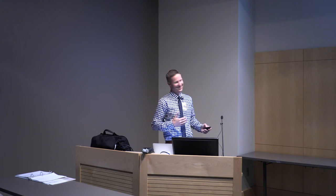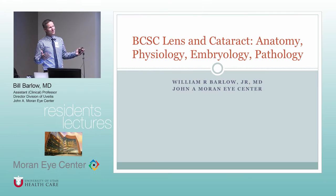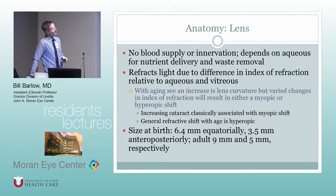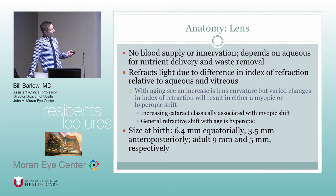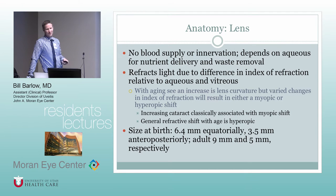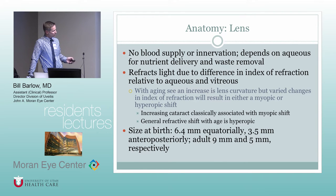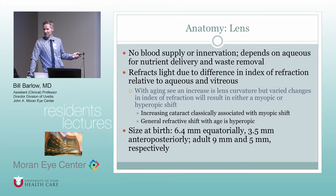We're talking about the basics of the BCSC — the anatomy and physiology. The lens has no blood supply or innervation, so it depends on aqueous for nutrient delivery and waste removal. With aging, there can be a myopic or hyperopic shift. The lens is always increasing in curvature, but changes in index of refraction can alter the refractive effect. At birth versus adult size, these are important anatomic considerations. In adults, the lens is usually about five millimeters thick at most.